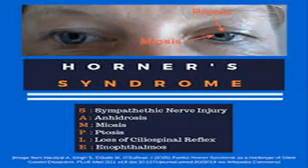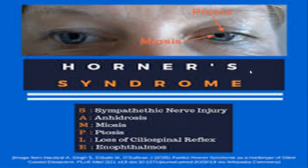Horner syndrome is very important because any lesion — be it a tumor, abscess, or consolidation in the upper lobe — will obstruct the sympathetic outflow to the eyes and cause Horner syndrome. A sympathetic nerve injury causes anhydrosis, miosis, unilateral partial ptosis, loss of ciliospinal reflex, and enophthalmos. These five findings are classically described in Horner syndrome. This is what is seen in this patient: ptosis, miosis when he lifts his eyelid, enophthalmos, and unilateral anhydrosis.